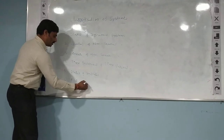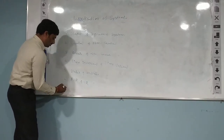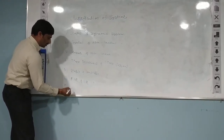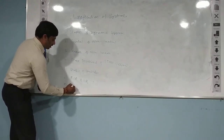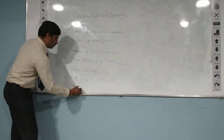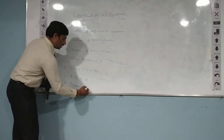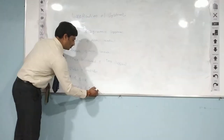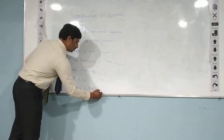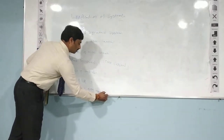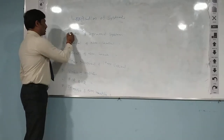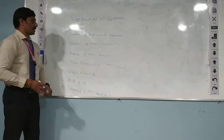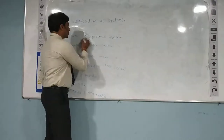Next is FIR and IIR systems, and then invertible and non-invertible systems. So a static system is defined as follows.